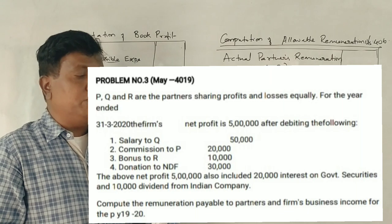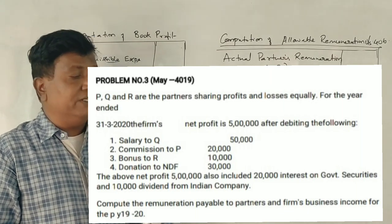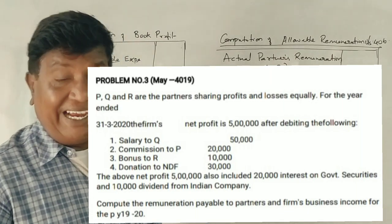Compute remuneration payable to partners and firm's business income for the previous year 1920.